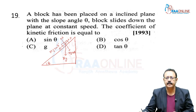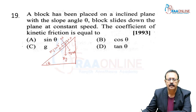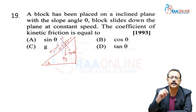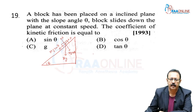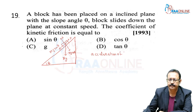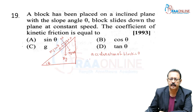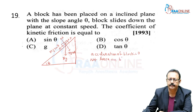The block is moving with constant speed, so acceleration = 0, meaning net force on block = 0. Therefore R is balanced by mg cosθ, and friction F is balanced by mg sinθ.